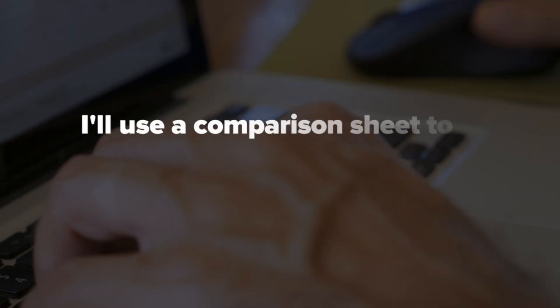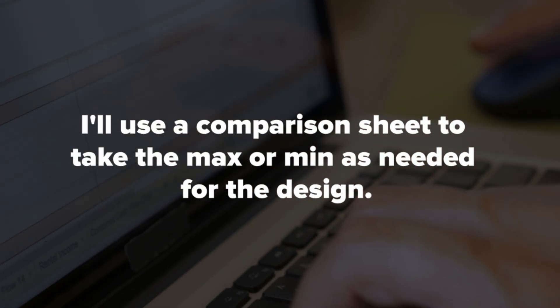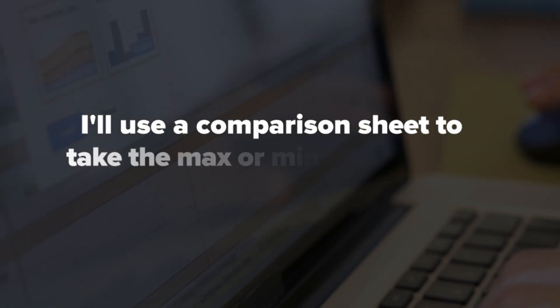And then at the end, I'll have a comparison sheet that would take the maximum of each of them or the minimum, depending on which way I need to do the design. But it will compile the maximum of all the Australian, US and New Zealand codes, compile it in one to find the answer that I'm looking for. So if it's load, it'll be at higher end capacity, it'll typically be on the lower end.